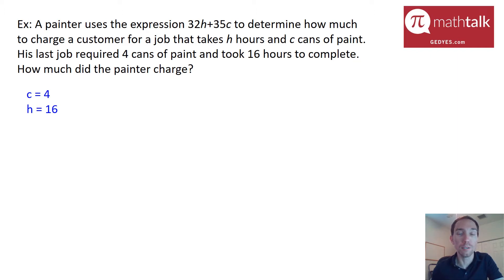All we're going to do here is take those values and plug them into our equation and solve for the price or the cost. So let's do that. I'm going to say P is the price. So P equals 32H plus 35C. I'm going to plug in 16 for H and 4 for C.